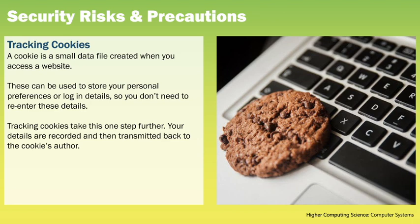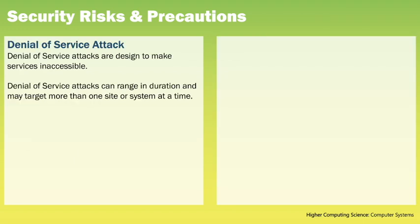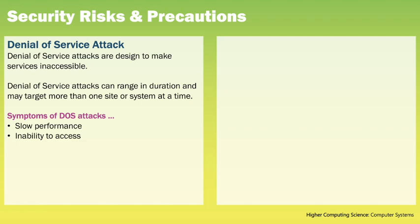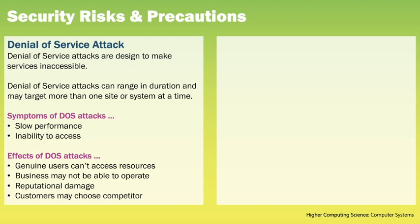A cookie is a small data file created when you access a website. These can store your personal preferences or login details so you don't need to re-enter them. Tracking cookies gather information and can help target personalised ads. Most are not harmful, however programmers can set up tracking cookies to send them your username and personal details without your knowledge. Denial of service attacks are designed to make services inaccessible, ranging in duration and potentially targeting multiple sites at once. When under a DoS attack, performance is slowed or the service becomes completely inaccessible. This means genuine users are unable to access resources, potentially causing reputational damage, loss of customers to competitors, financial losses, and increased labour costs such as specialist network engineers needed for recovery.